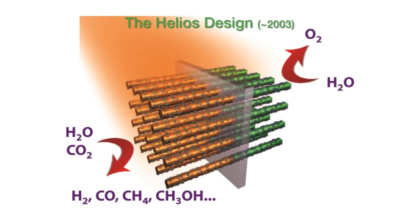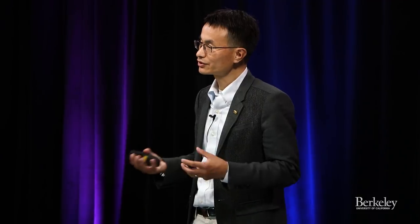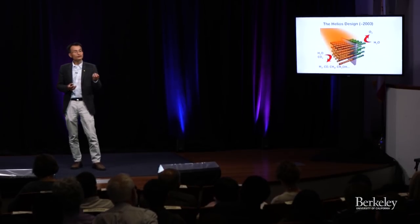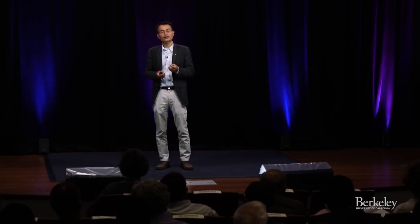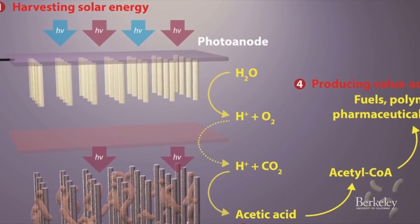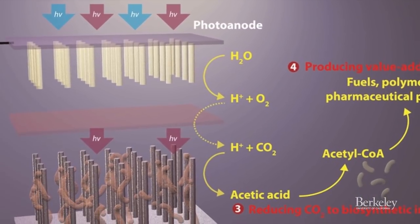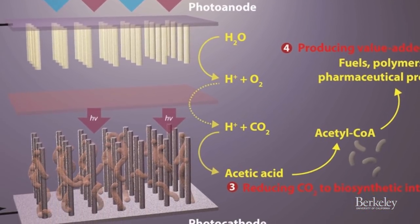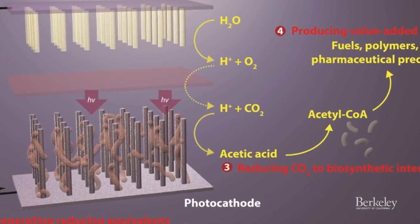In order to make this design work, we needed to discover a new class of semiconductor materials that capture sunlight, and discover a new class of catalysts to promote the chemical reactions we want to carry out. Over the past ten years, we finally figured out ways to link a collection of biological and synthetic catalysts to semiconductor nanostructures, and indeed we can do the chemistry as we planned.